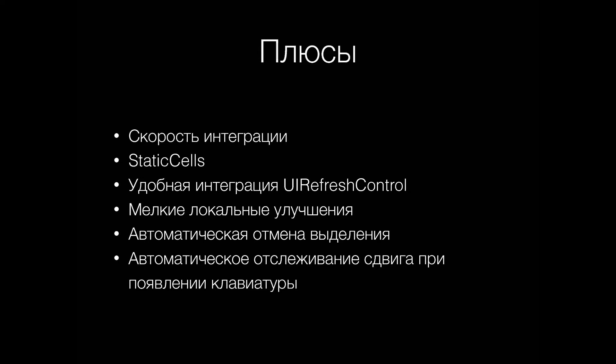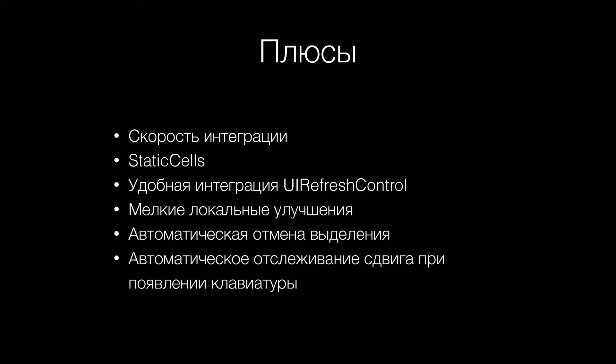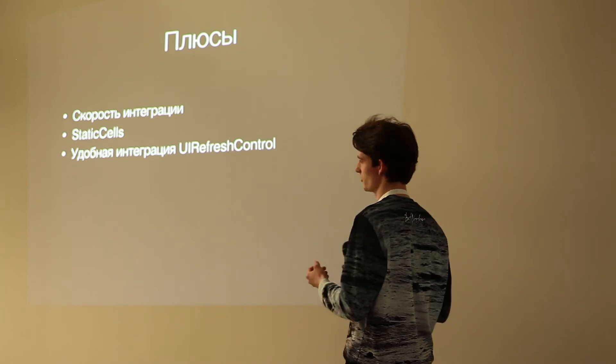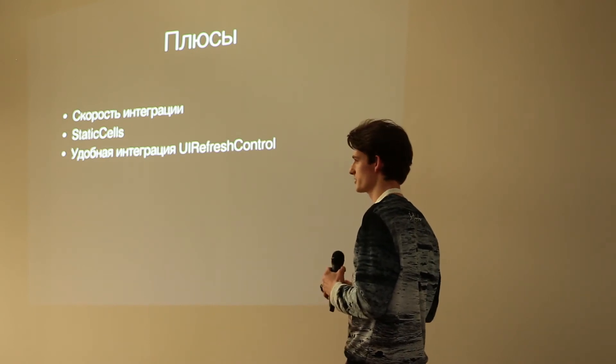Первый плюс — скорость интеграции: если вы делаете макет-прототип и создали класс, наследуемый от TableViewController, у вас сразу будут заготовлены делегат, dataSource, и даже часть методов закомментирована — достаточно просто раскомментировать. Второй плюс — статичные ячейки: это очень хорошо, если у вас нет кастомного дизайна, а есть экран настройки или заполнения анкеты — достаточно намутить всё на storyboard. Третий плюс — удобная интеграция refresh-контроллера: с выходом iPhone 6 и 6 Plus экран больше не 320 точек, и нужно следить за рамкой и за тем, чтобы refresh-контроллер появлялся в нужное время. С TableViewController достаточно просто инициализировать переменную.